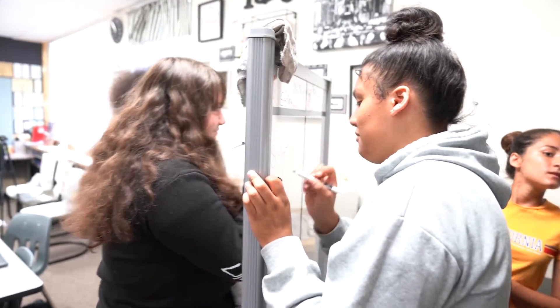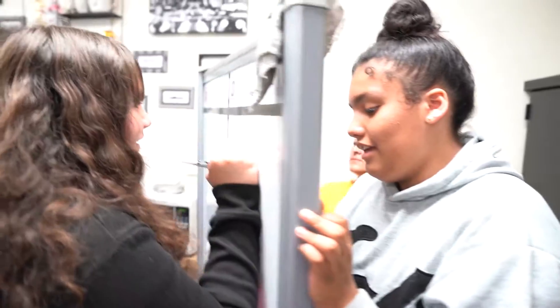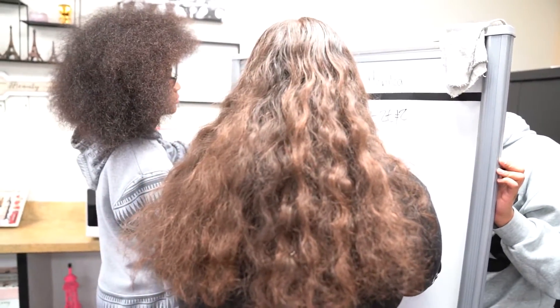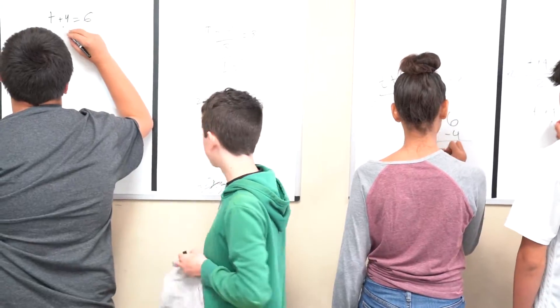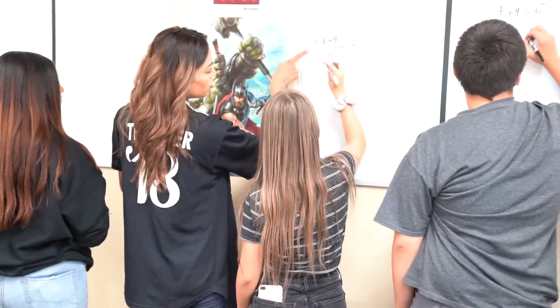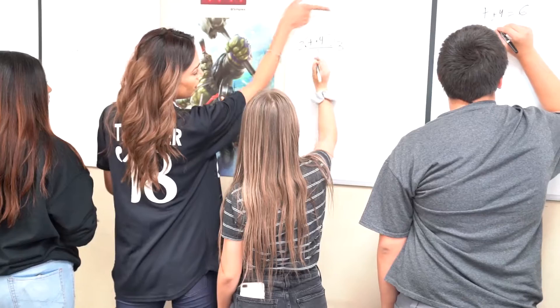Normally, if it's a long problem, I like to tell students: give me only step one first. Then I'll check everybody's step one. Then give me step two — I'll check everybody's step two. So again, if there are mistakes, we catch them way before they continue all the way to the bottom of the problem.